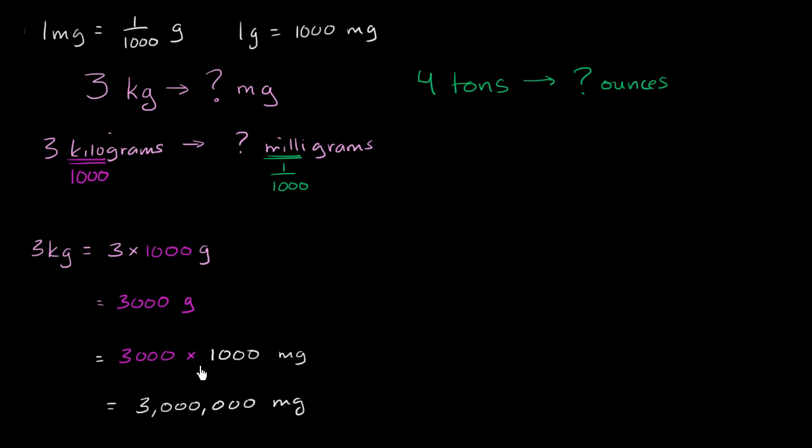Another way to think about this multiplication, I've got three zeros here, three zeros here. So my final product should, so 3 times 1 is 3, and then I should follow that with the six zeros. So I get 3 million milligrams.